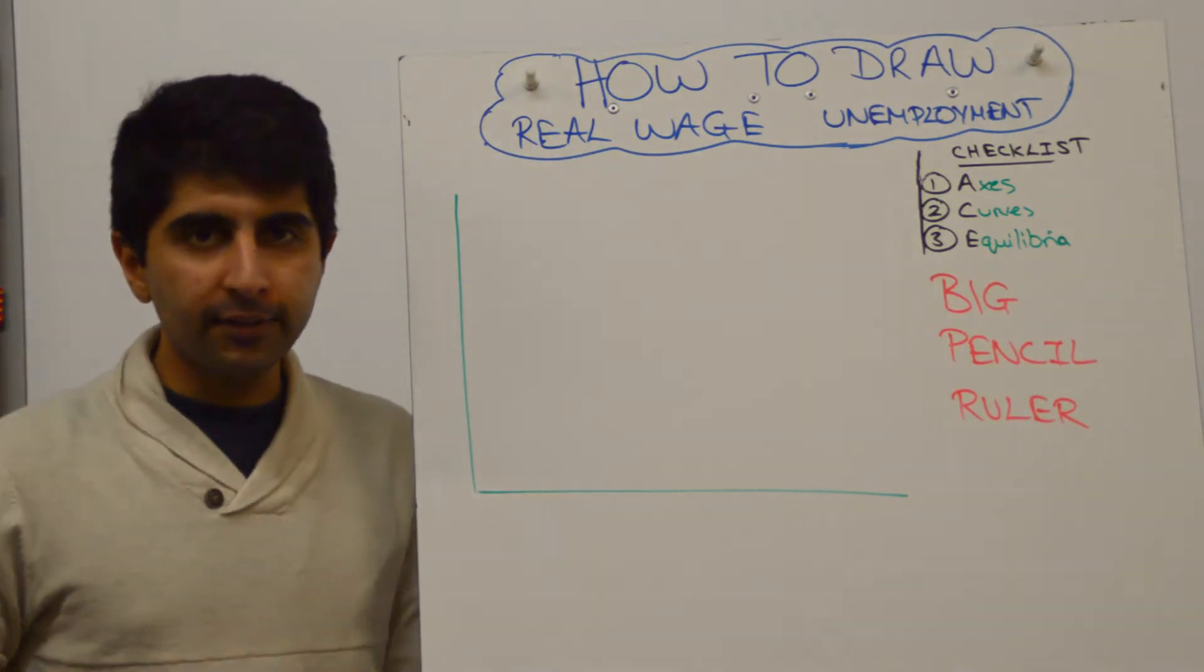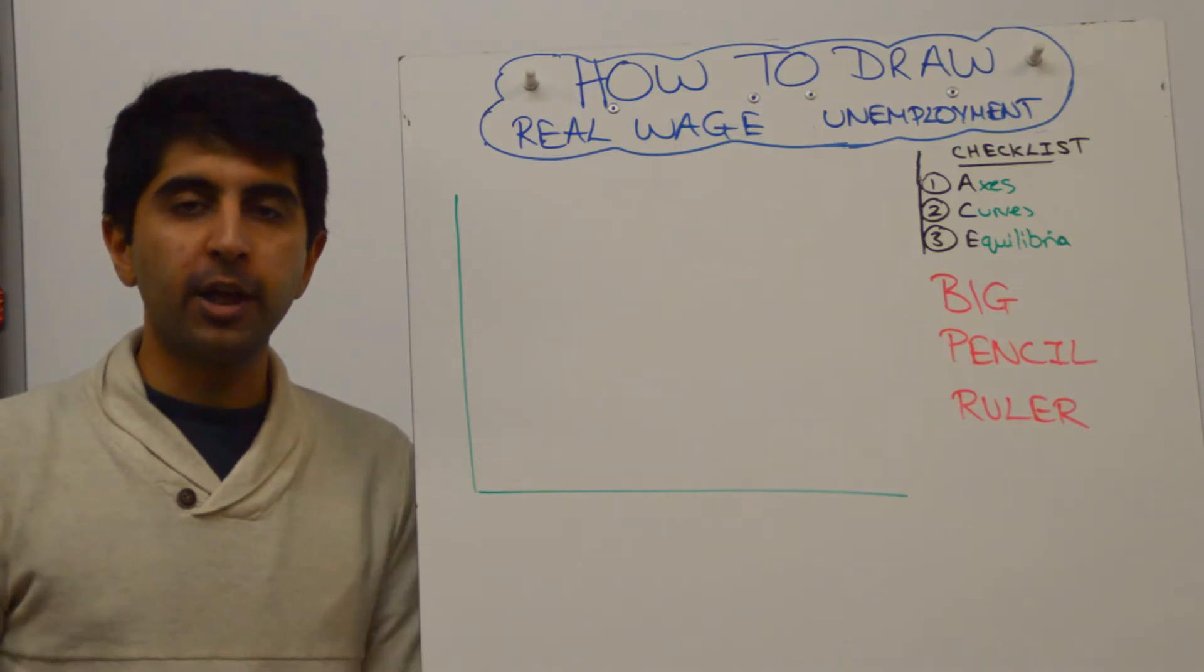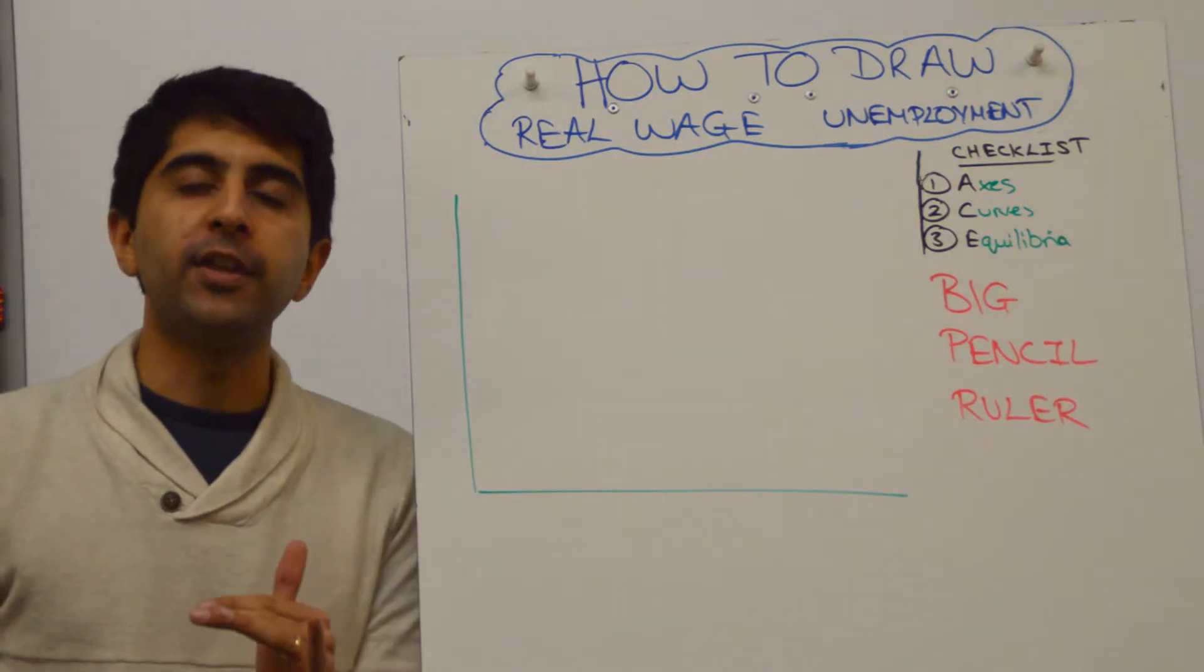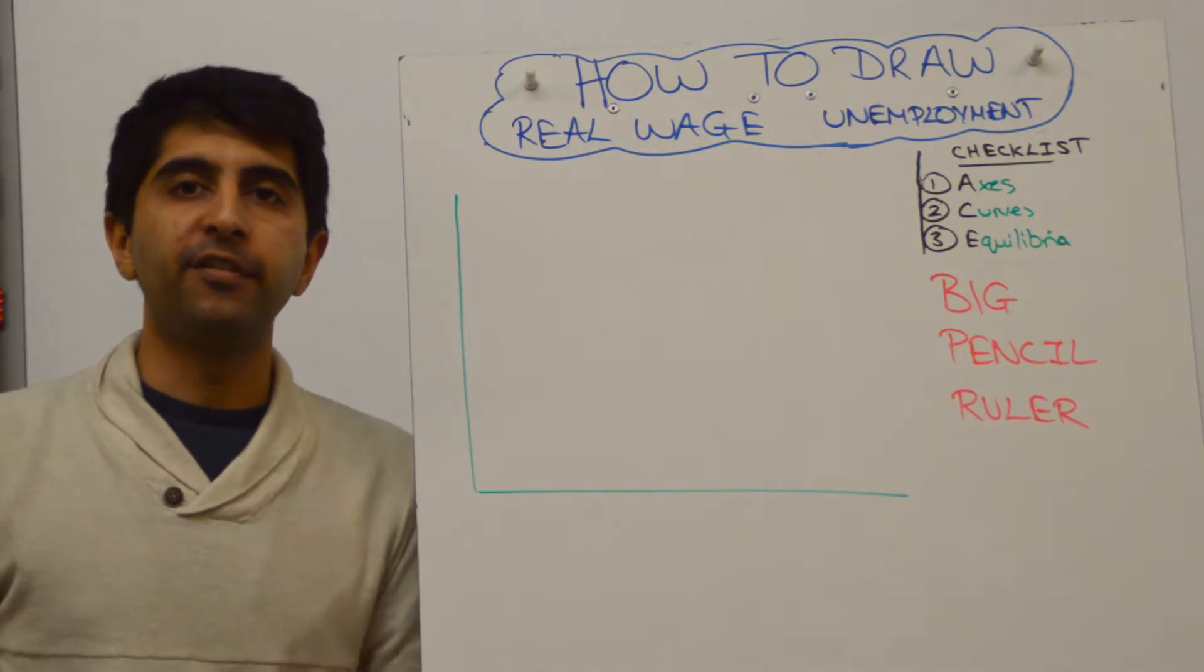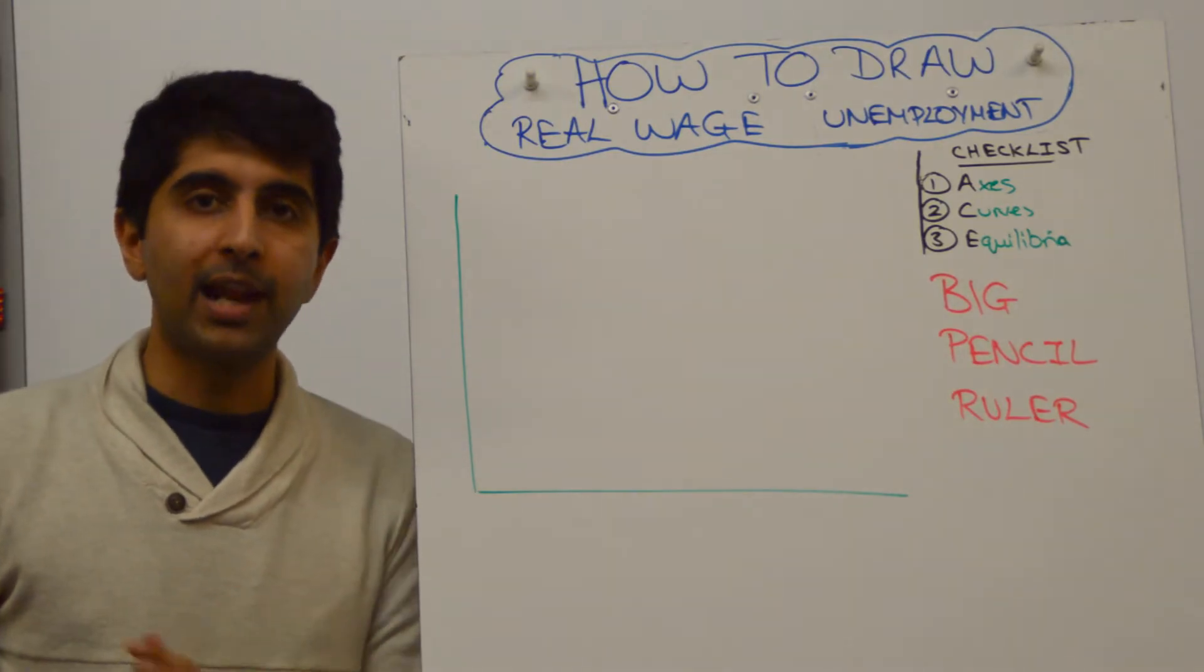Well, remember, classical unemployment or real wage unemployment occurs when there is a minimum wage in the economy placed above the equilibrium wage rate in the labour market.